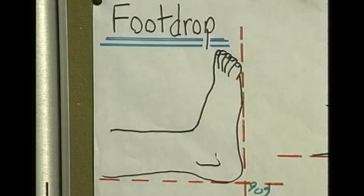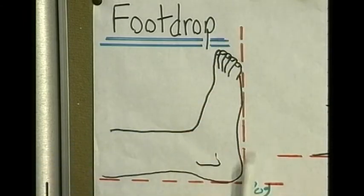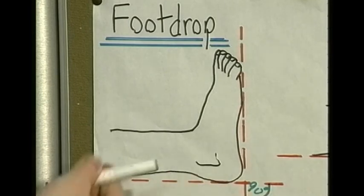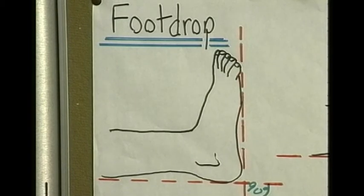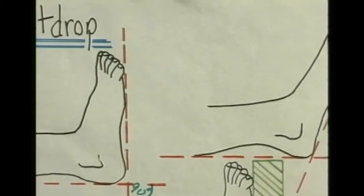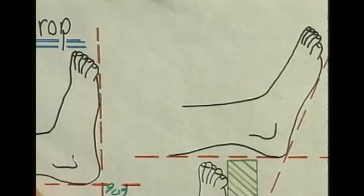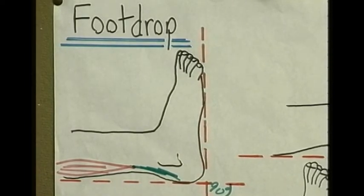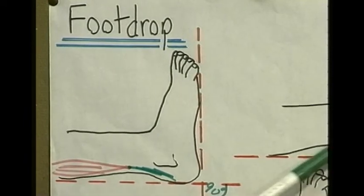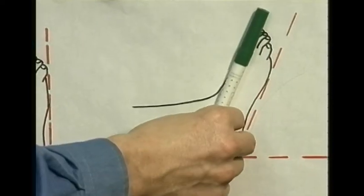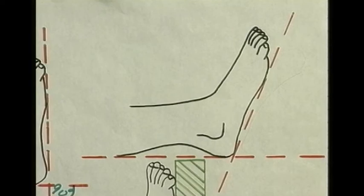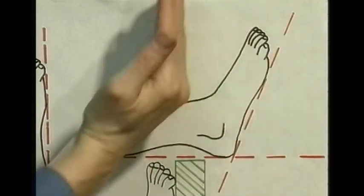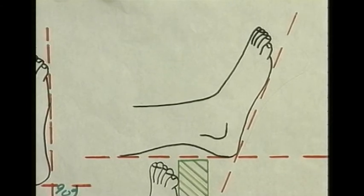One example is foot drop, a complication of muscle shortening due to immobility. Normally the foot should be around 90 degrees to the leg — that is the healthy position. Due to disuse, if the calf muscle becomes fibrosed and contracts, it tends to pull the foot downward. You end up with a dropped foot position because the contracted calf muscle pulls the foot down — and it can drop much further than normal, giving the appearance that the foot has dropped.